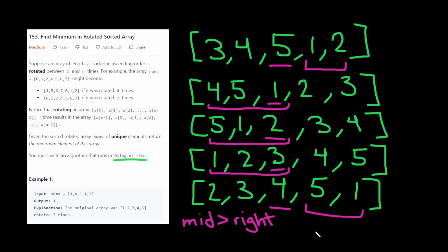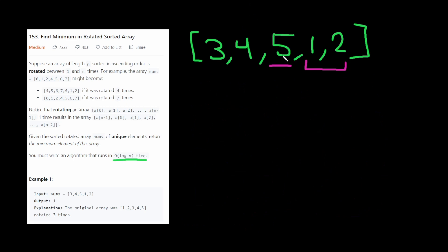Now let's continue going forward with the example they gave three, four, five, one, two, and see how the algorithm works. Okay, so we have our first iteration here. Middle is five. We compare it with two. Five is greater than two. So now we cut up the array like this.